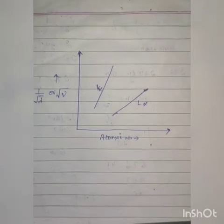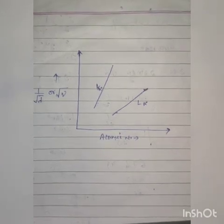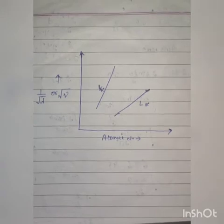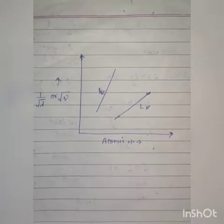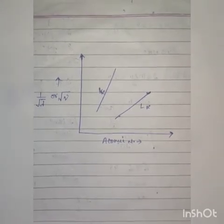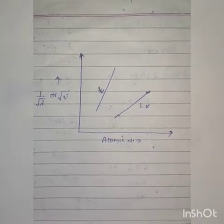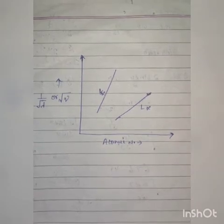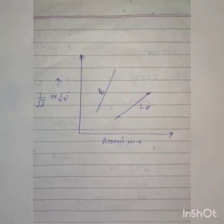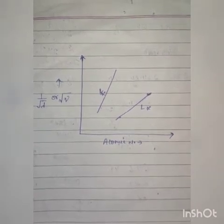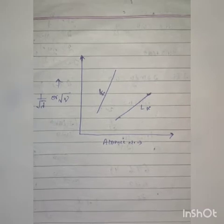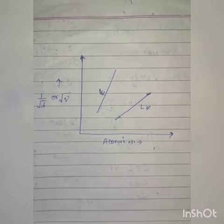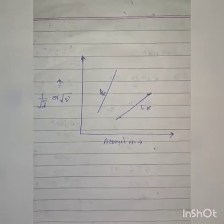Hello students. Today we will discuss Moseley's law. Moseley's law determined the nuclear charge. In 1913, Moseley performed a systematic study of characteristic x-rays of many elements — 45 elements.